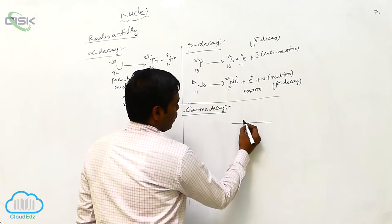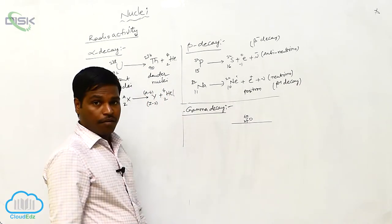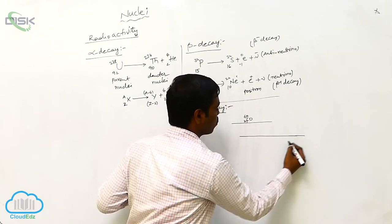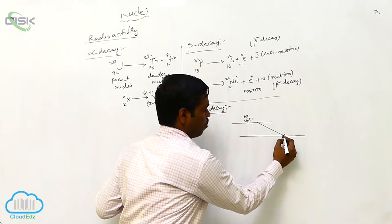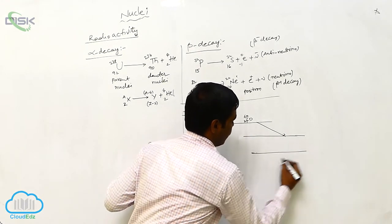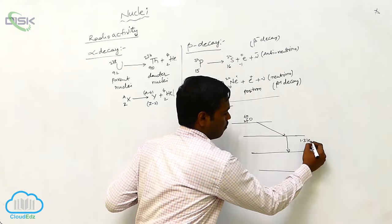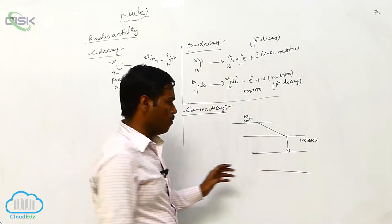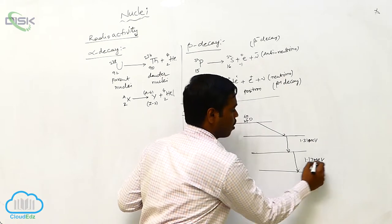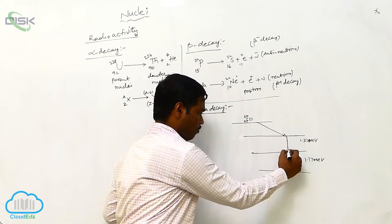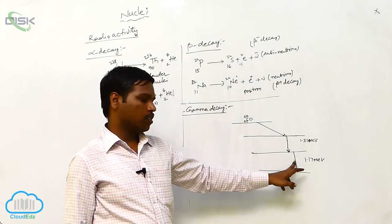For example, cobalt-27-60 is coming to lower energy levels. This cobalt-27-60 transitions to a lower energy level and then again to lower energy levels, giving 1.31 mega electron volts. When it comes to the next lower energy level, it gives 1.17 mega electron volts. These photons being released with these energies are called gamma radiation.